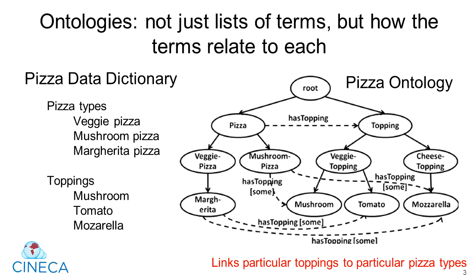The images in this slide help to illustrate the difference between a simple controlled vocabulary and an ontology. On the left of the slide, you see a very simple pizza data dictionary, which lists the types of pizzas that are available, as well as a separate list of the types of toppings that are available. No information is known about how the pizza toppings relate to the pizza types.